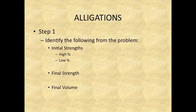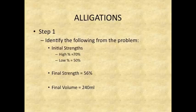Step 1: Identify the following from the problem — initial strengths (high percent and low percent), the final strength, and the final volume. The initial strengths are: high percent equals 70, low percent equals 50. Your final strength is 56 percent and your final volume is 240 ml.